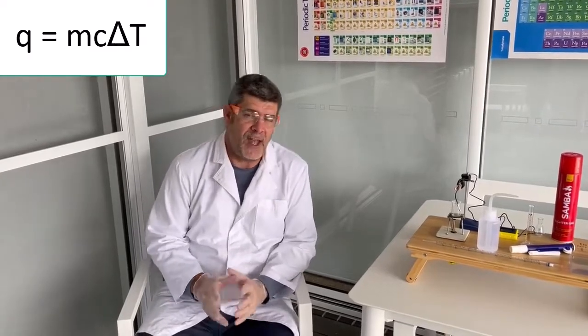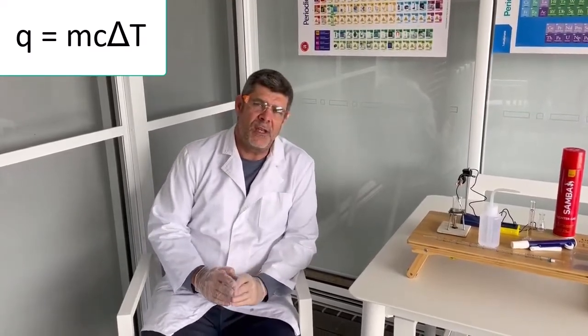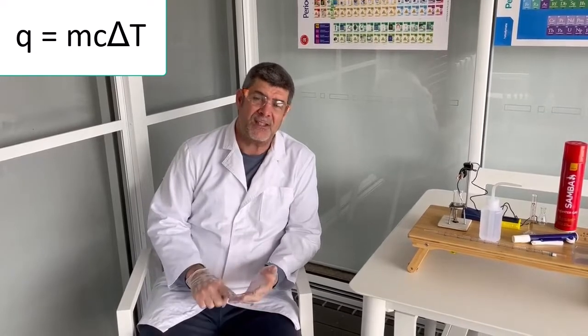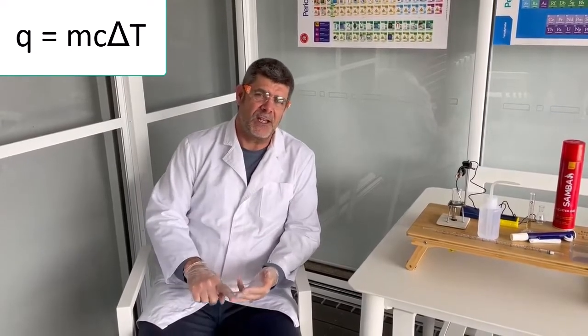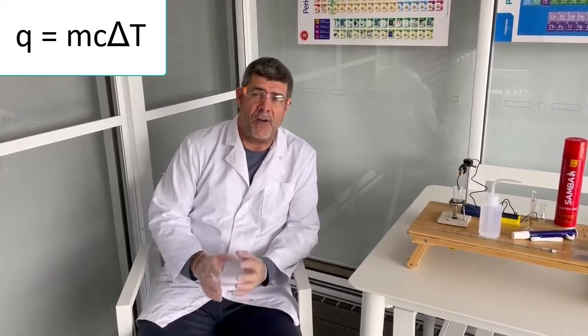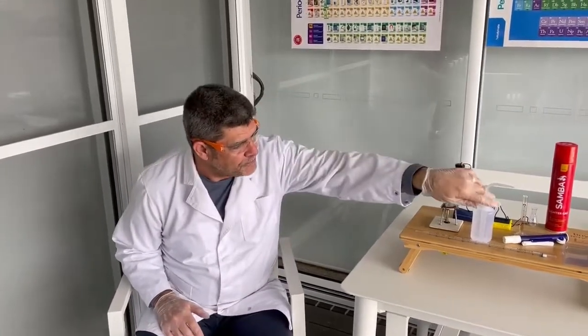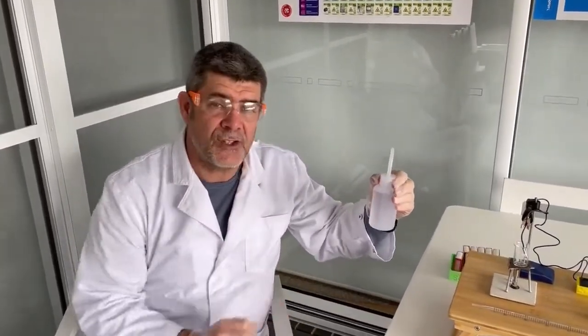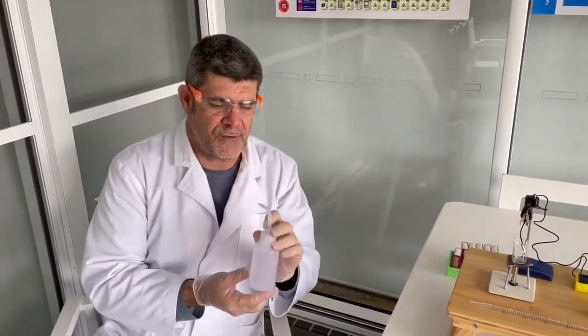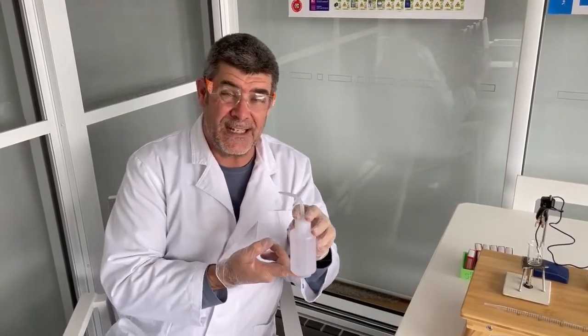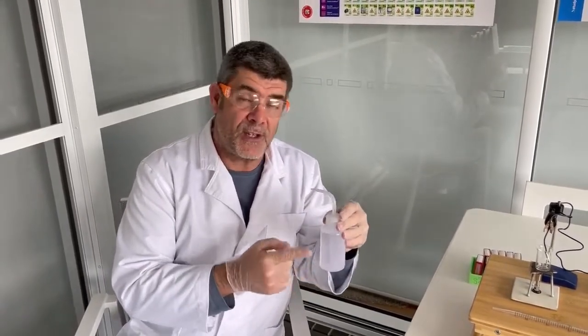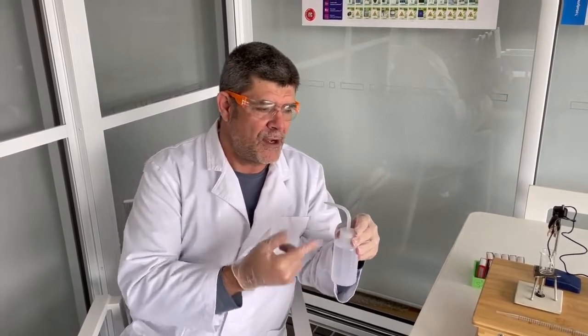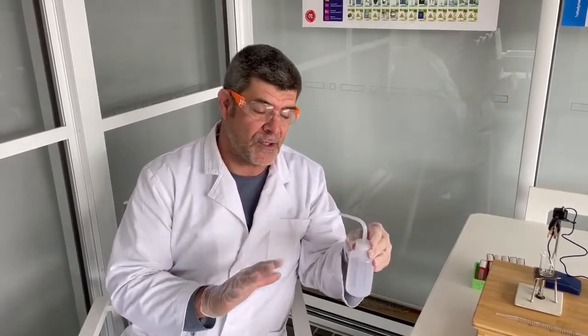To do that, I'm going to use what we've called the MCAT formula. That is, the change in enthalpy is equivalent to the mass multiplied by the specific heat multiplied by the temperature of a specific substance. That substance is going to be water. Now what I'll need to do is take a certain volume. One of the advantages of distilled water is it has a density of one gram per mil. So if I measure five mils of water, then I know I will have five grams of water.